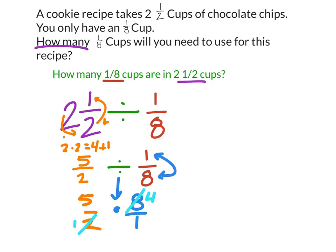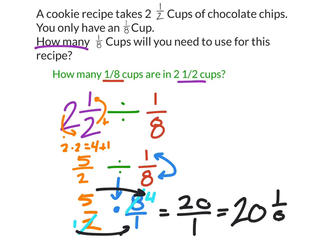So I got five times four, which is 20, and in the denominator one times one, so I'm just going to show this is 20. And again, just so we don't get confused with something like this, one eighth cups, I would get rid of that and simply redefine it as 20 scoops.